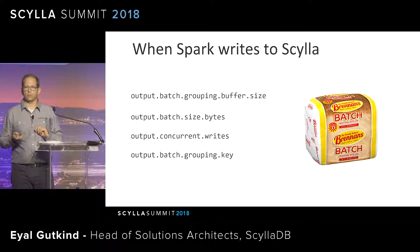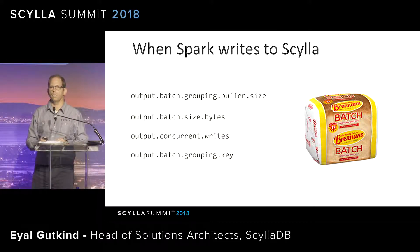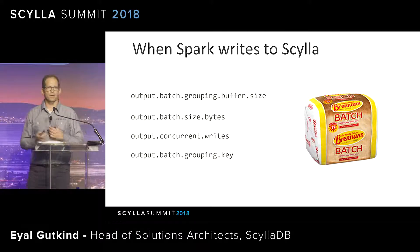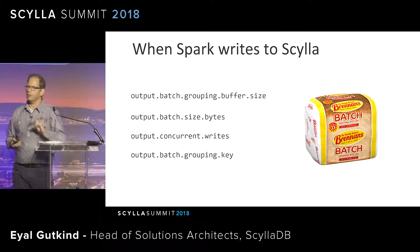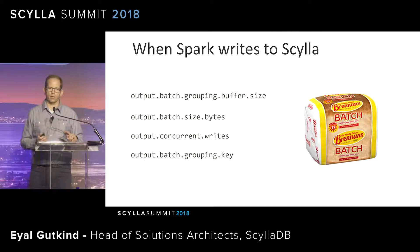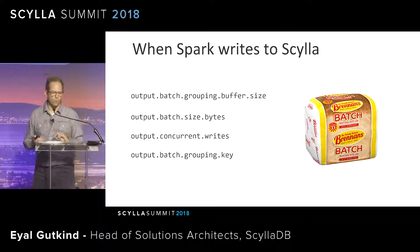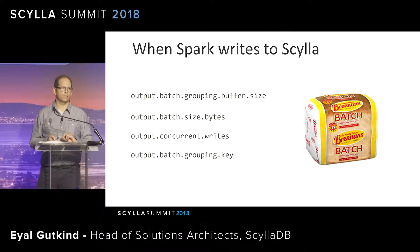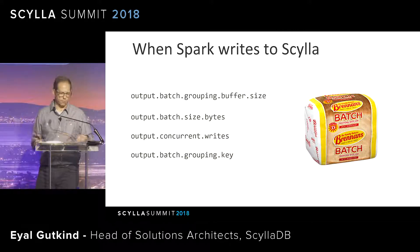When the connector writes into Scylla nodes, it's going to use a local quorum. That means if you have a replication factor of three, two nodes must acknowledge the write. If you have a very high write throughput, I would argue you might want to change it to local one to prevent any additional latency, especially if you have a lot of Spark nodes or can sustain the throughput.